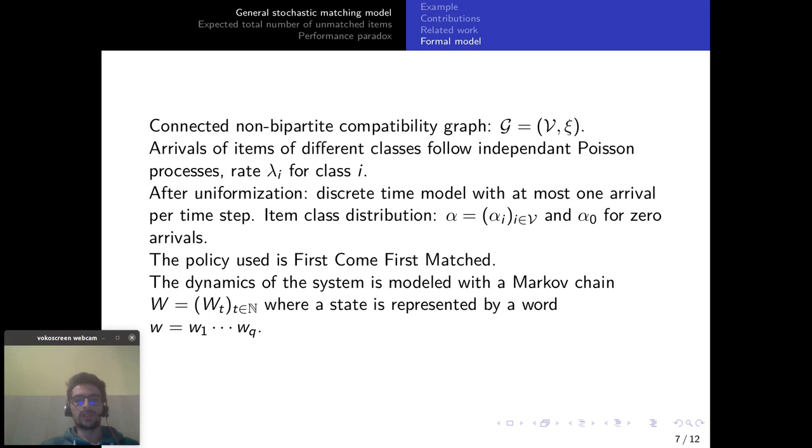So as I explained earlier the policy that we are going to use is the first come first match and under this policy the dynamics of the system is modeled with a Markov chain W where a state is represented by a word where the letters W1 through WQ represent the classes of items remaining in the system and in the order of their arrival from left to right.